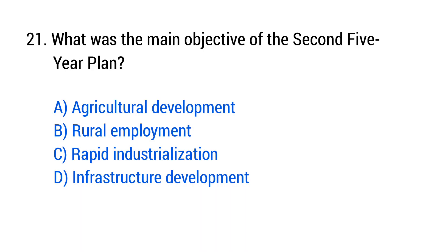Question No. 21: What was the main objective of the Second Five-Year Plan? The right answer is Option C, rapid industrialization.